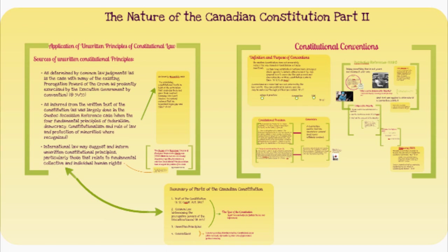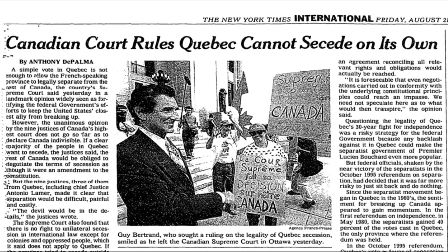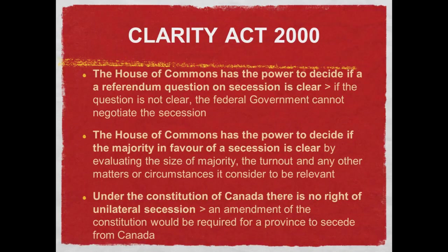The conclusion to this case was that unilateral secession is unconstitutional. However, if there is a clear majority on a clear question, the government has the responsibility to enter into negotiations to try and resolve the issues. The Clarity Act was the legislative response to this case. It gave the federal government the authority to determine whether the question was clear and whether there was a clear majority.